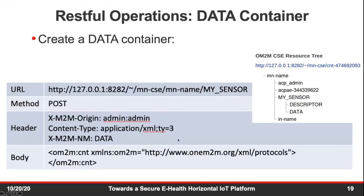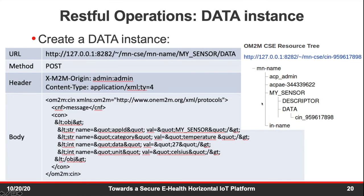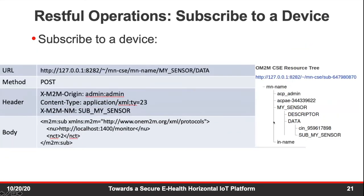Similarly, for data containers, we use type 3 to create a container connected to the sensor application, named 'data', and it will be generated in the resource tree. To post a data instance, we use type 4 and put the values — for example, value 27 was sent as a temperature in Celsius. We specify all this in the data instance and it's stored on the server side. For subscribing to a device, we use type 23 and specify which device to subscribe to, and a subscription entity is created under the resource tree.